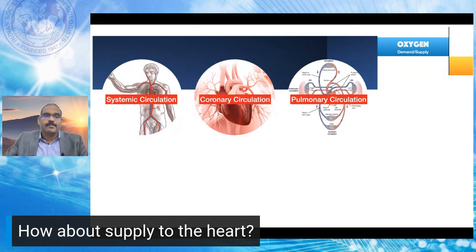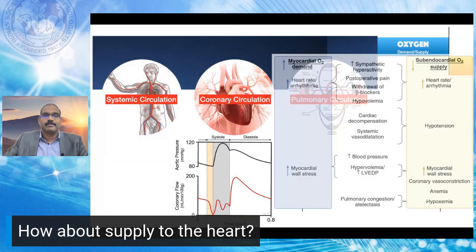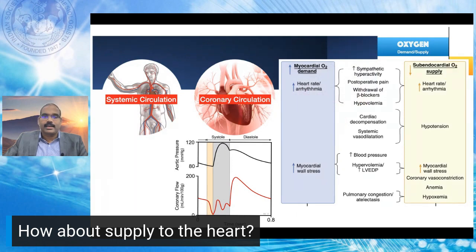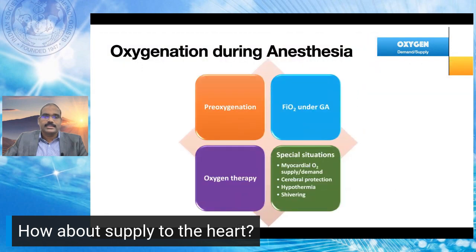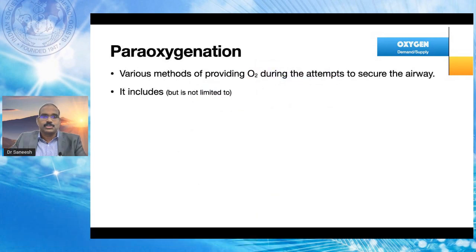The heart receives its blood supply from the coronaries, which is unique: coronary supply is reduced during systole when the heart is working hardest and maximized during diastole when it relaxes. Perioperatively we must be cautious about factors affecting myocardial oxygen supply and demand. Oxygenation during anesthesia encompasses pre-oxygenation, appropriate FiO2 under anesthesia, various oxygen therapy devices, myocardial oxygen supply-demand balance, and cerebral protection — including why hypothermia and shivering matter for anesthesiologists.